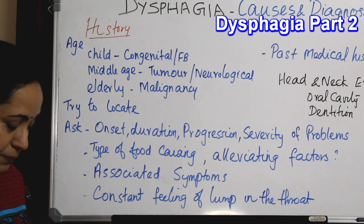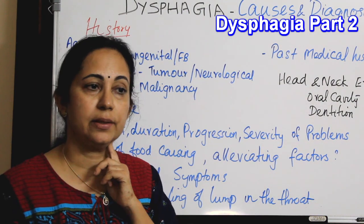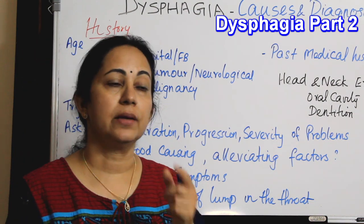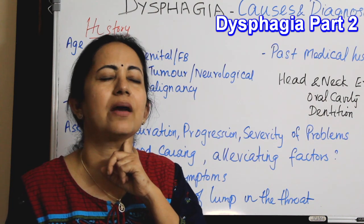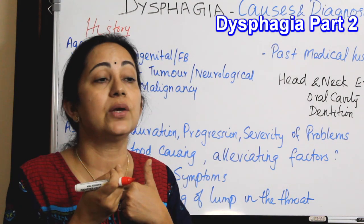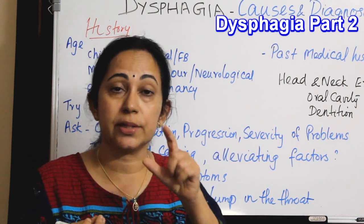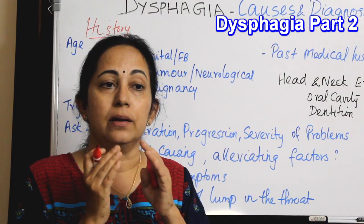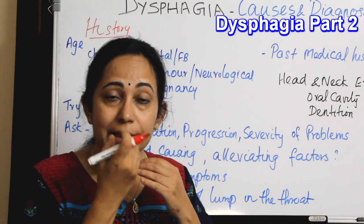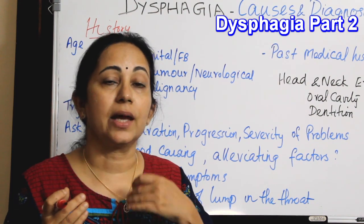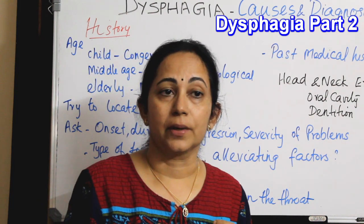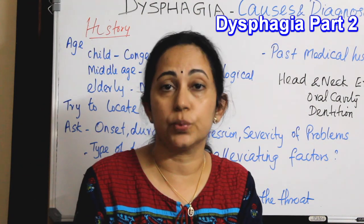Also try to locate the lesion. Sometimes the patient will point to the area — for example, in acute tonsillitis or pharyngitis causing enlarged jugulodigastric lymph nodes, the patient will point below and behind the angle of the mandible and say they have pain while swallowing. Oropharyngeal or pharyngeal dysphagia problems will be related to the lip or tongue, and the patient can locate those areas. If it is esophageal, the patient will describe a feeling of food sticking in the lower throat, the neck, the retrosternal area, or the epigastrium.